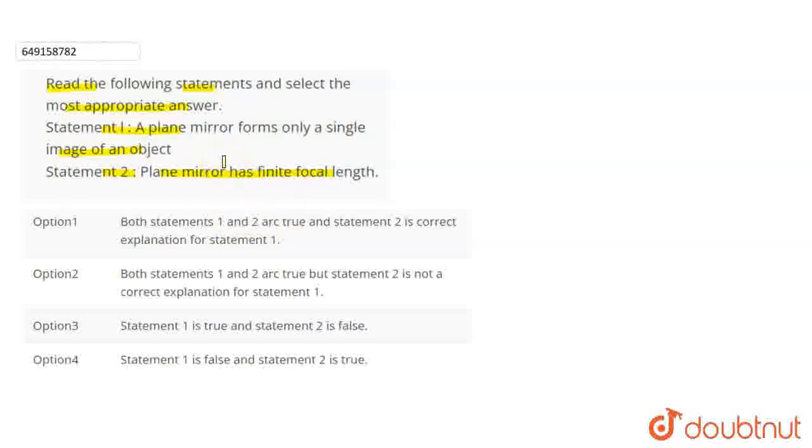So, this is an assertion-reason type question. There are two statements given and we have options. If I talk about statement 1, I know how to do this. I know how to draw a plane mirror.